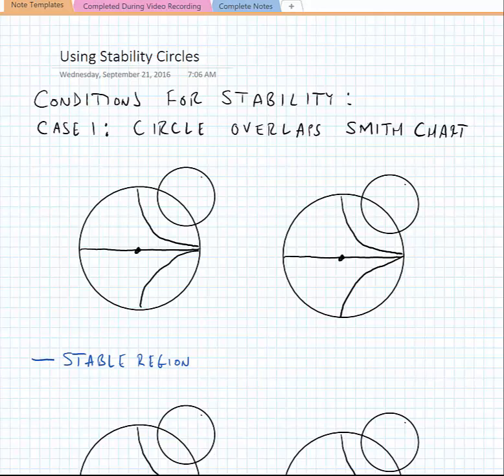If we assume that the magnitude of S11 is less than one, then the regions of these circles represent different gamma_in's.